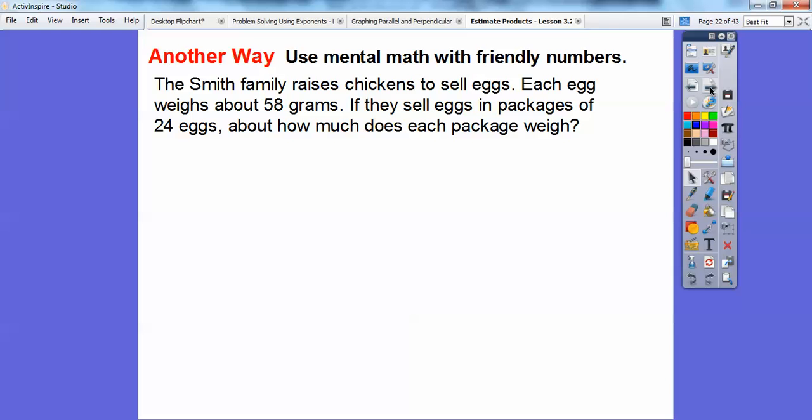Let's try another problem here. Here we're going to use mental math with some friendly numbers I like to call. So the Smith family raises chickens to sell eggs. Each egg weighs about 58 grams. If they sell eggs in packages of 24 eggs, about how much does each package weigh? Well, what I'm going to do is round 24 to 25 because, you know, a friendly number is 25 because I think a 25 is like a quarter, 25 cents is a quarter. And we'll round 58 to 60.